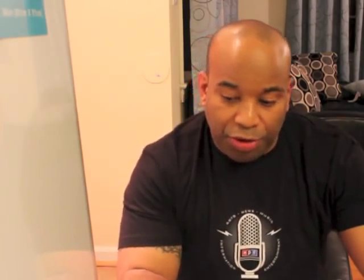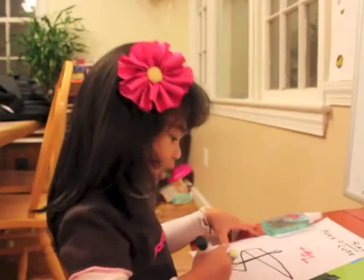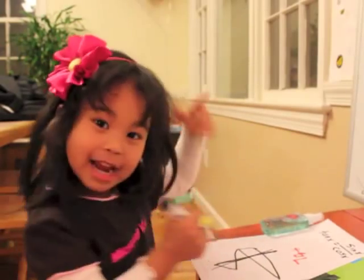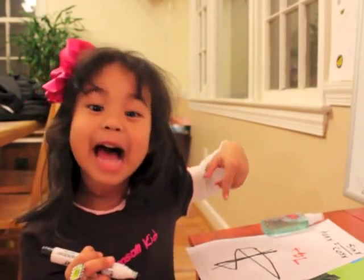Great job, baby girl. Now let's look at question 2. It says calculate the tangent of 3 pi over 2. The tangent is the ratio of sine over cosine. You can do it, baby girl. Just take your time.